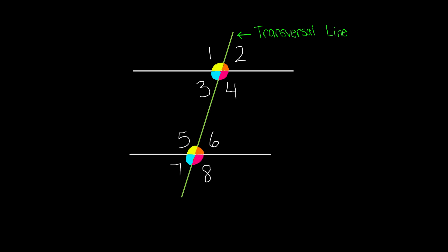Corresponding angles are angles that are in the same corners — not angles that are the same measurement, but angles that are in the same corners. For example, angle number one is in the upper left corner because it's above its line and on its left side. In the same way, angle number five is above the line and on its left side. So angle number one and angle number five are two corresponding angles.